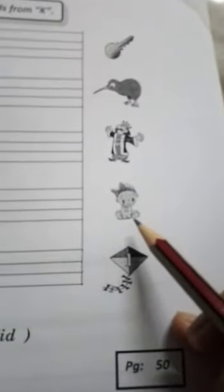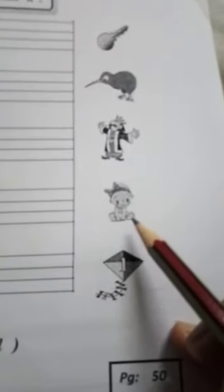Third picture is a king. King, you have also seen in cartoons and stories. Next picture is a kid. Kid is a child, baby, small.